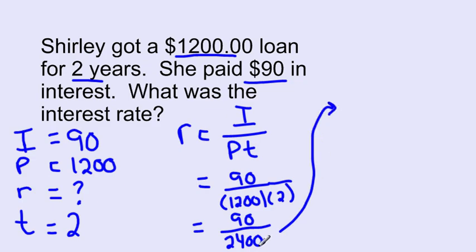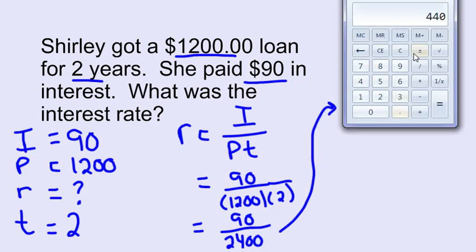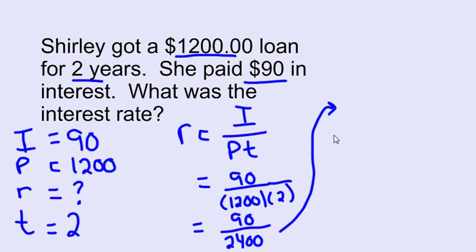If I work that in my calculator, 90 divided by $2,400, I'm going to get 0.0375. So 0.0375.